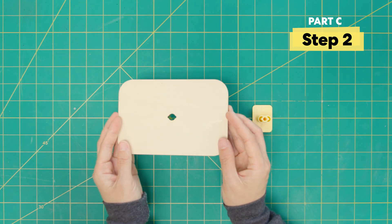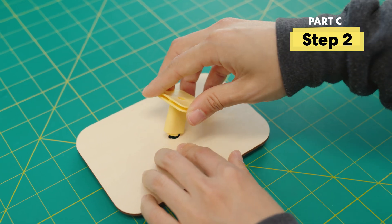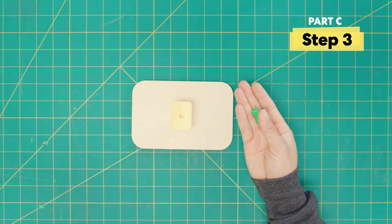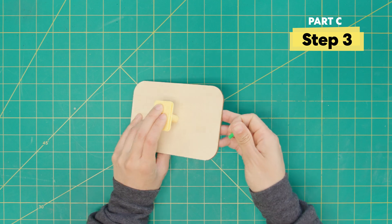Now flip this piece over and attach the yellow stand. Take a green bolt and twist it into place from the bottom.